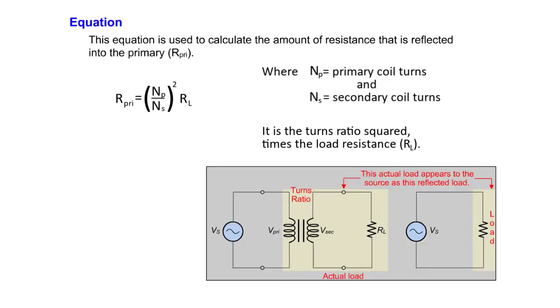This equation is used to calculate the amount of resistance that is reflected into the primary. It is the turns ratio squared times the load resistance.